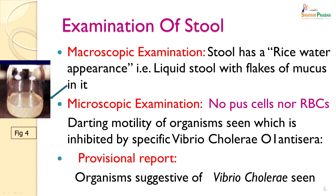On microscopic examination, no pus cells or RBCs were seen. Darting motility of the organism was seen, which was inhibited by Vibrio cholerae O1 antiserum. So a provisional report was sent to the clinician suggesting that an organism suggestive of Vibrio cholerae was seen.